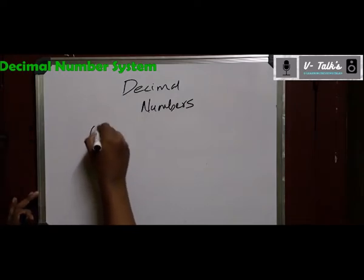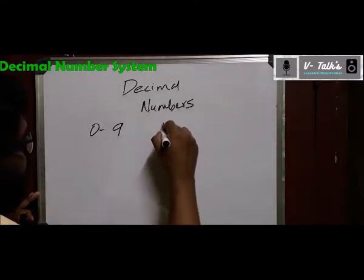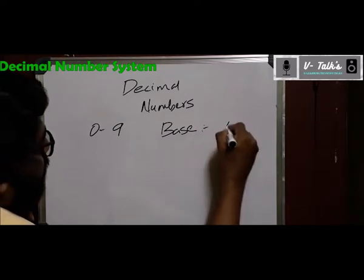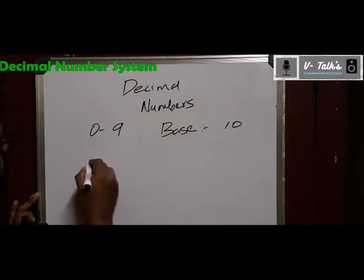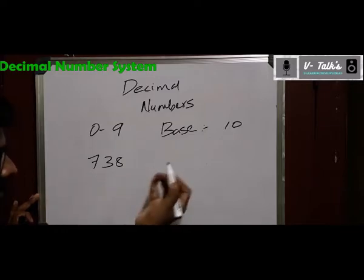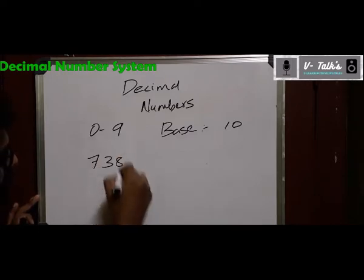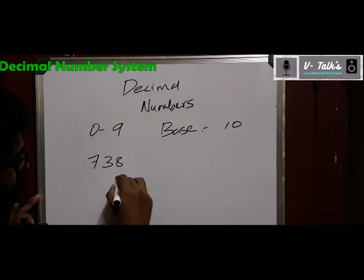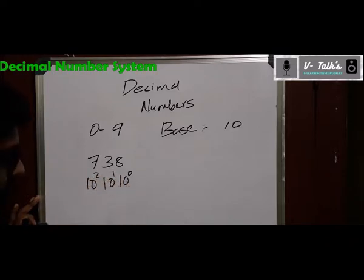We are using numbers from 0 to 9; if you count, you get 10 digits, so the base of the decimal number is 10. Now, if you write the number 738, how do you get that particular value? Here, 8 is in the 1s position, so the base is 10 and the positional value of 8 is 10 raised to 0. The positional value of 3 is 10 raised to 1, and the positional value of 7 is 10 raised to 2. If you had 4 digits, it would be 10 raised to 3, and so on.